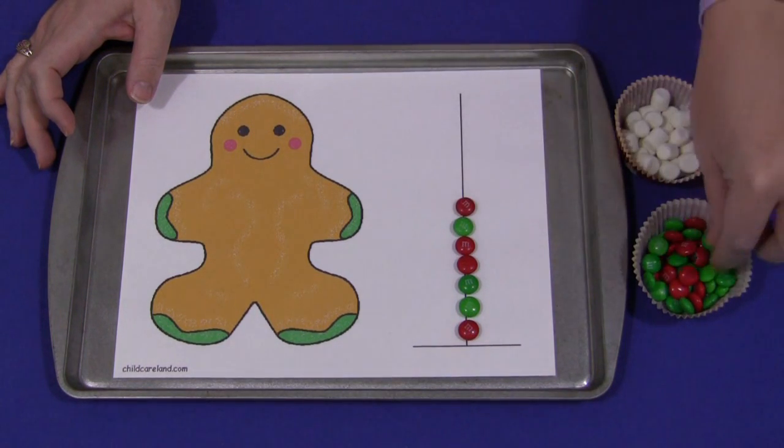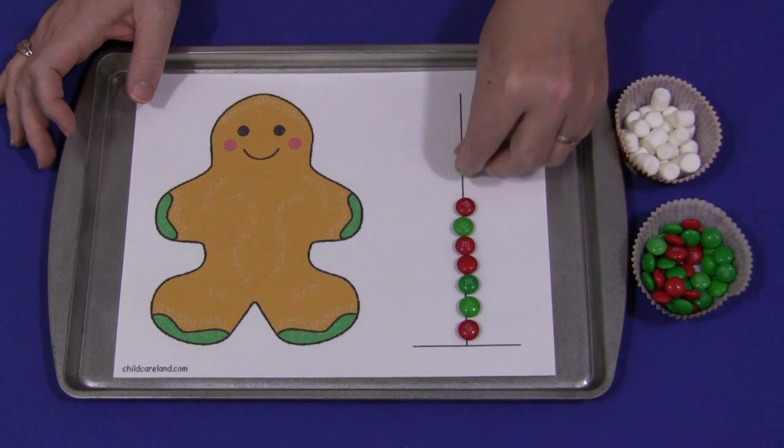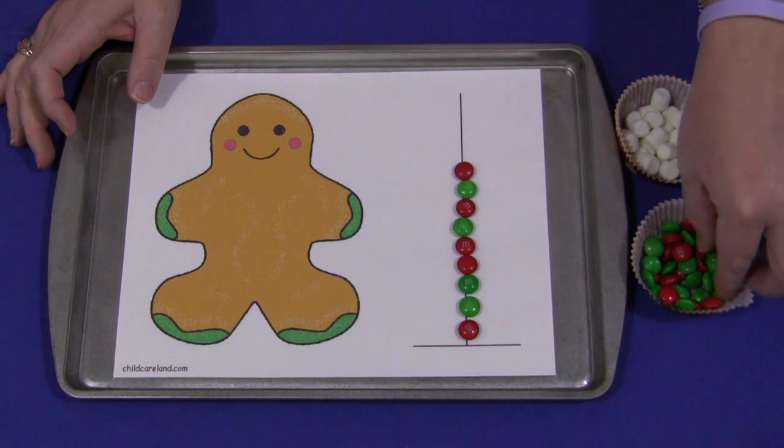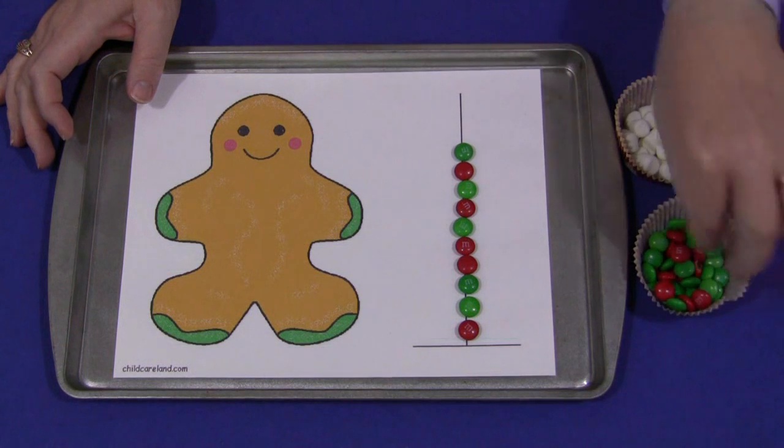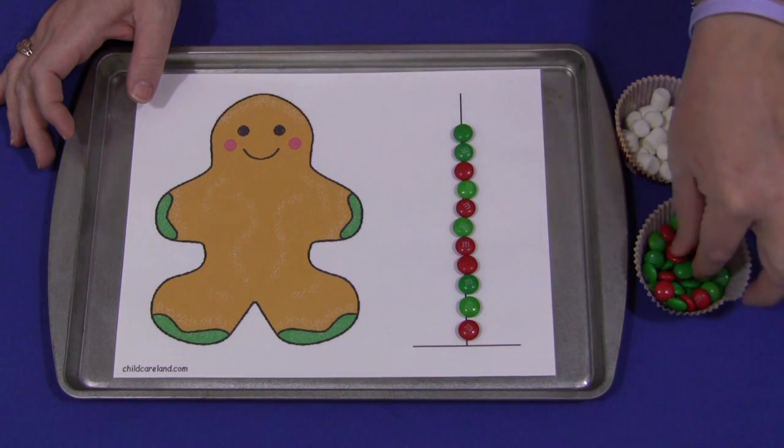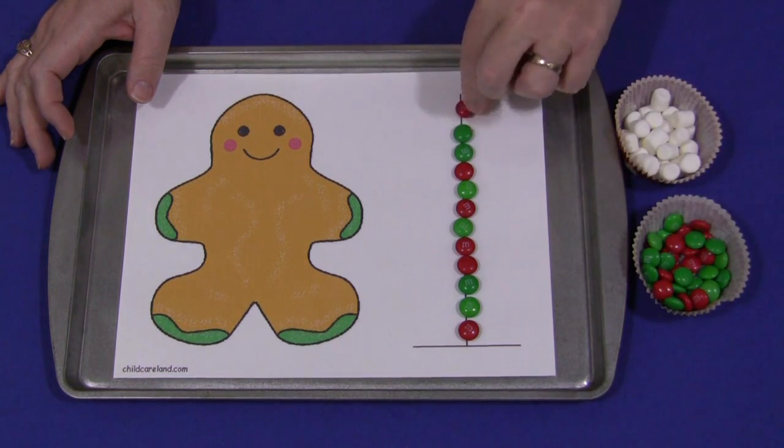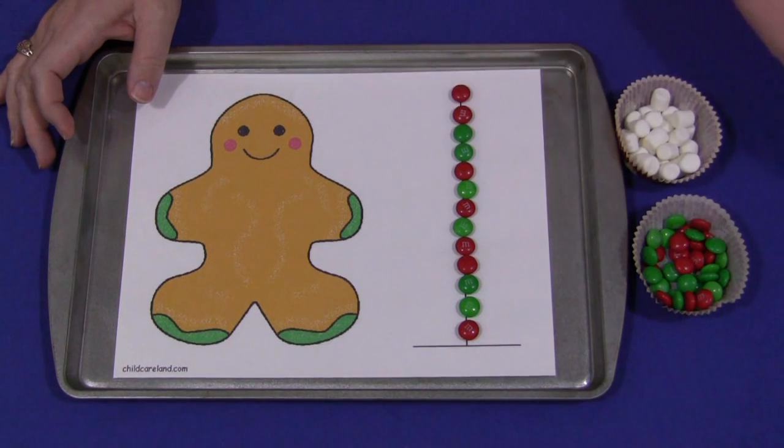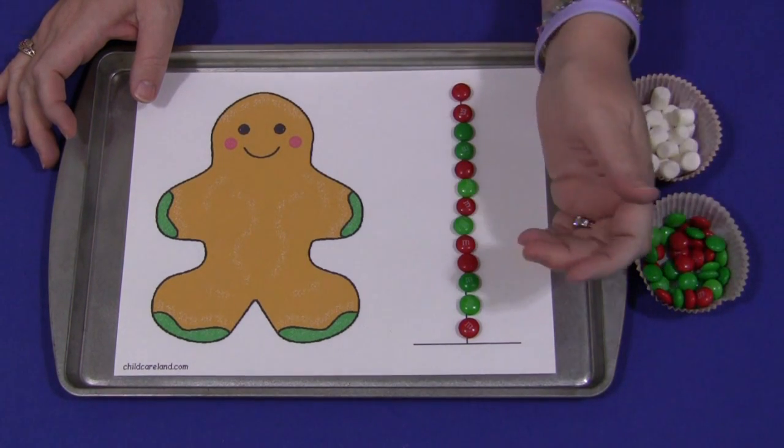But that's up to you whether you'd want to do something like that. So they'd fill up the whole line with their M&Ms. And then they would count how many M&Ms are on their line or whatever you are using to measure them with.